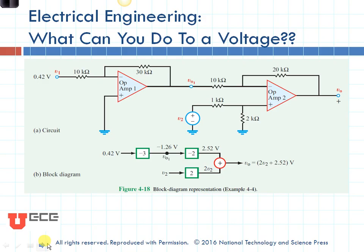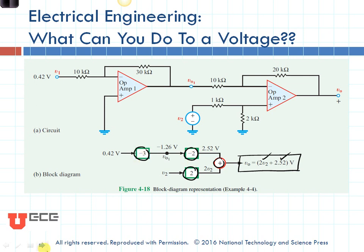Electrical engineering is about what can you do to a voltage. A lot of times we like to add voltages together, we like to add constants to them, we like to multiply them by various values in order to make the circuit do what we want. Let's suppose that we want our output to be a linear combination of a constant and our input voltage, like this. This kind of math might look like 2 times V2 plus minus 2 times some kind of voltage. Something like this. So how would we design that sort of system?